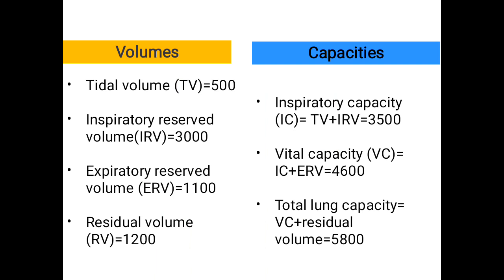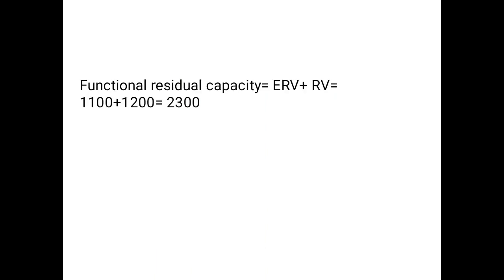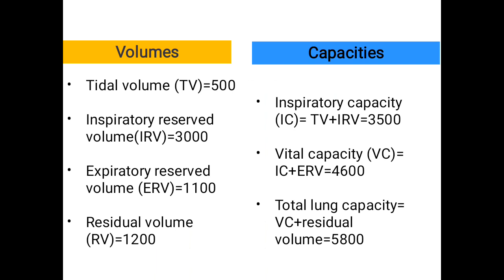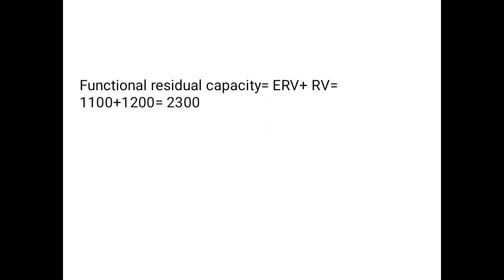Capacities are calculated quantities, formed by adding two or more volumes together. The capacities are: inspiratory capacity (3500 ml), vital capacity (4600 ml), total lung capacity (approximately 6 liters), and functional residual capacity, which is the sum of expiratory reserve volume and residual volume.